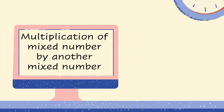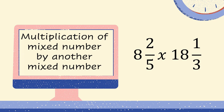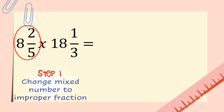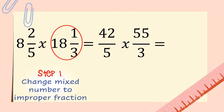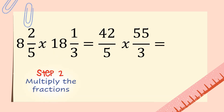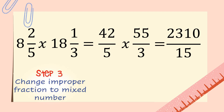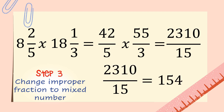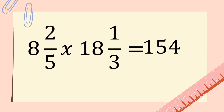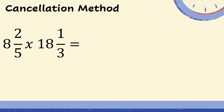Multiplication of mixed number by another mixed number: eight and two-fifths times eighteen and one-third. Step one: change the mixed numbers to improper fractions. Step two: multiply the fractions. Step three: change the improper fraction to a mixed number — this will be 154. We can also use the cancellation method, where we can cancel two pairs of numerator and denominator.